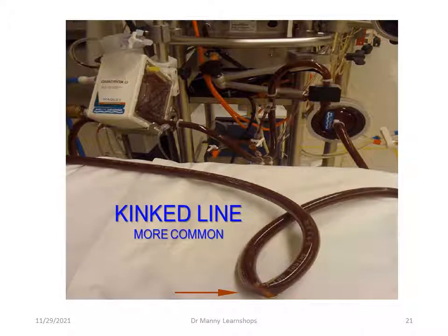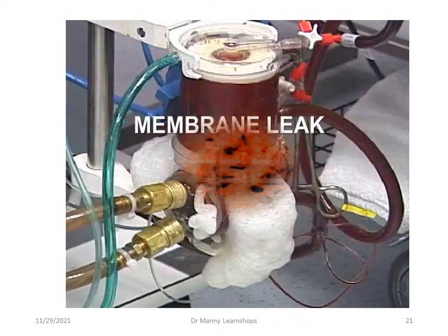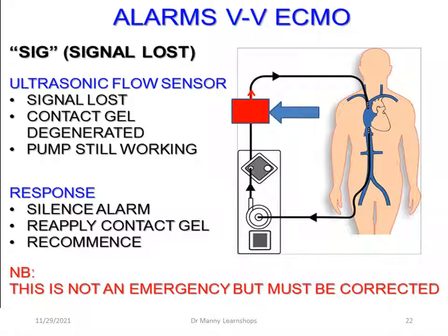Examples of circuit complications include a kink in the line, which is more common, clotting in the oxygenator, which is rare, and a membrane leak, which is very rare. In VV ECMO, signal loss can occur with the ultrasonic flow sensor — this typically requires more gel to be applied. The response is a silent alarm; reapply the gel and recommence monitoring. This is not typically an emergency, but it must be corrected.